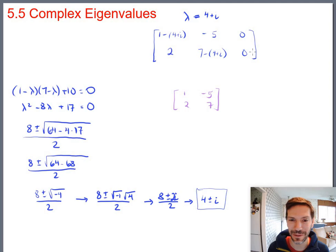We can at least simplify. That part's not bad. Let's distribute the minus sign on the diagonals here. And get 1 minus 4 is negative 3 minus i. Don't forget to distribute that part of the minus sign. So minus 5 and 0 and 2 and 7 minus 4 is 3 minus i and 0.